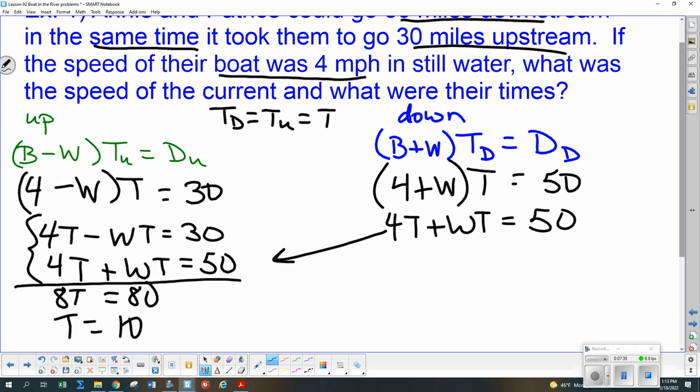And I need some units to go with that. And since it's miles per hour, my time will be hours. So I've found one of my variables. So now I need to look back at these equations that I've got and decide, well, where do I want to plug in a 10 to figure out what the W is? So basically, we have these two choices right now. Doesn't matter which one.